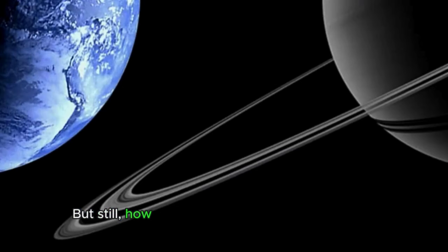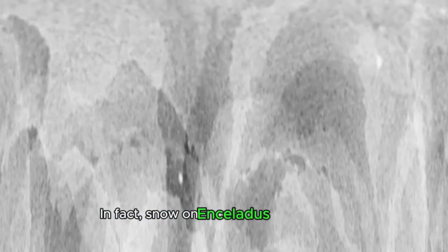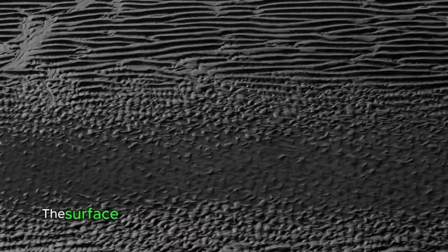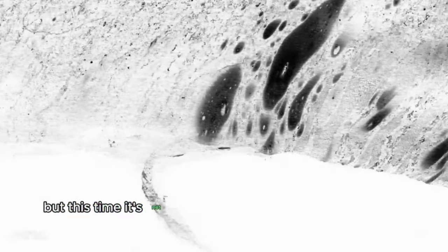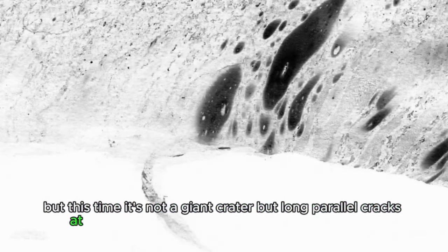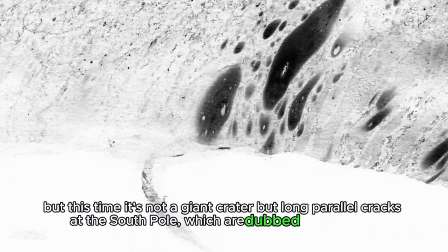But still, how could snow appear on the satellite? Does it have an Earth-like atmosphere? In fact, snow on Enceladus forms inside. The surface of Enceladus, also like Mimas, has one feature. But this time, it's not a giant crater, but long parallel cracks at the south pole, which are dubbed tiger stripes.